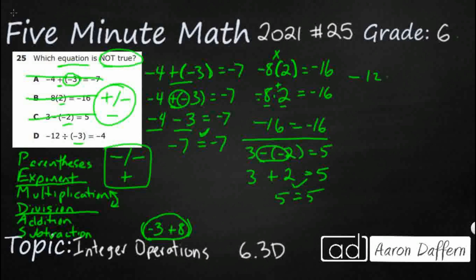Negative 12 divided by negative 3 equals negative 4. Well, 12 divided by 3 is 4. Oh, we've got a minus and a minus, remember, that makes a positive. So that's positive 4 equals negative 4. That doesn't work. Our answer is D.